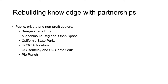Today the Amamutsun are working hard to regain their traditional knowledge, celebrate their heritage and reclaim their sovereignty, and this includes their obligation to care for and steward the land and all living things. One of the ways in which they're doing this is by building partnerships with land managers and research institutions in the public, non-profit and private sectors. These organizations include the Sempervirens Fund, California State Parks, Mid-Peninsular Regional Open Space, UCSC Arboretum and Pye Ranch, plus research scientists at UC Berkeley and UCSC.